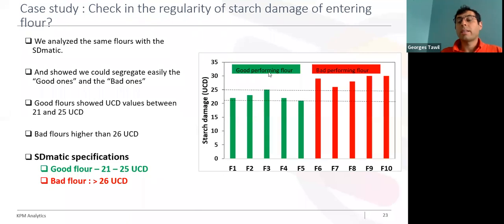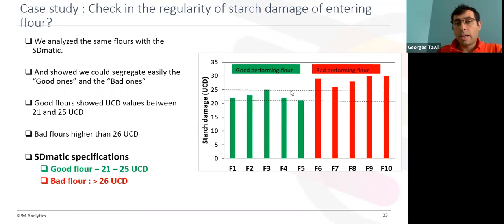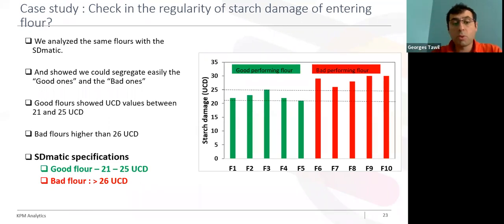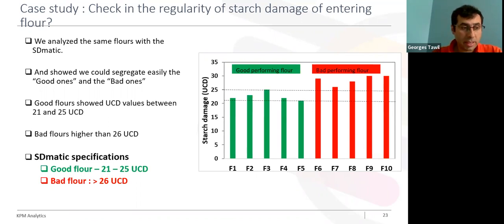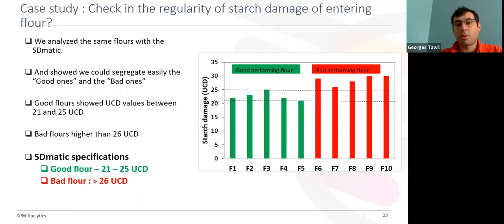We analyzed these 10 flours for starch damage content with the SD-MATIC, and we were easily able to separate the good flour from the bad flour and explain the reason. The good flours had a relatively low amount of starch damage — between 21 to 25 UCD — and the bad flours showed higher content of starch damage, more than 26 UCD. Based on this result, the bakery added SD-MATIC specification to their incoming flour requirements. Today, the miller must determine starch damage for the delivered flour.